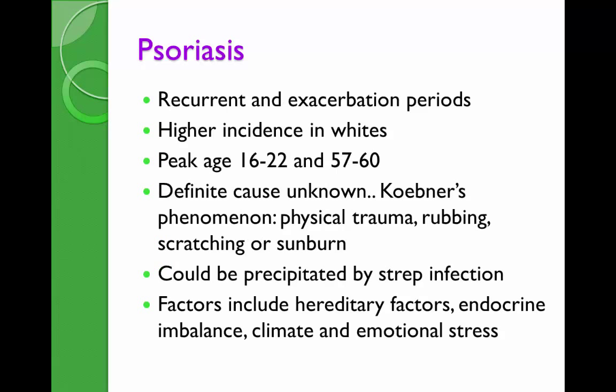The etiology involves recurrent exacerbation periods. The definitive cause is unknown, but well-identified triggers include injury — called the Koebner phenomenon. Wherever healthy skin suffers even minimal trauma, it will produce papules, plaques, and silvery scales on top. This is why psoriasis appears mostly on the elbows and knees — areas subject to frequent minor trauma — causing flare-ups.